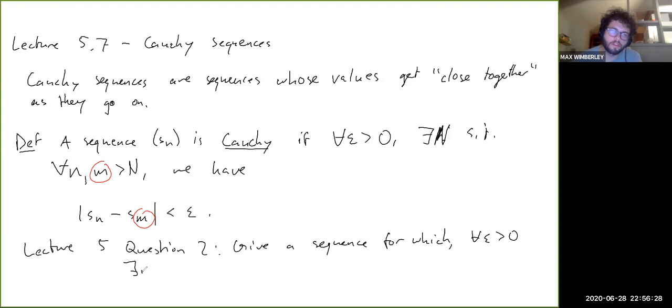There exists a capital N such that for all N bigger than capital N, SN minus SN plus one is less than epsilon, but SN does not converge.